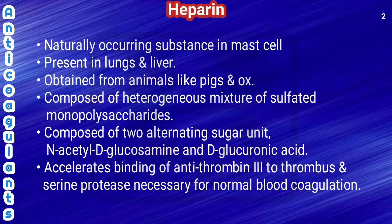Heparin is a naturally occurring substance present in mast cells, lungs, and liver. It is also obtained from animals like pigs and dogs. It is composed of a heterogeneous mixture of sulfated mucopolysaccharides and has two alternating sugar units: N-acetyl D-glucosamine and D-glucuronic acid. It accelerates the binding of antithrombin 3 to thrombin and serine protease, which are necessary for normal blood coagulation.